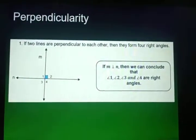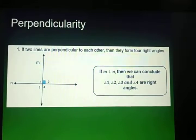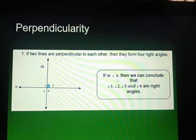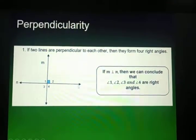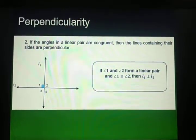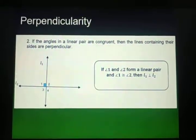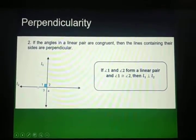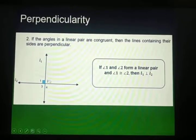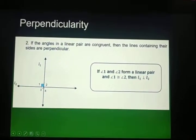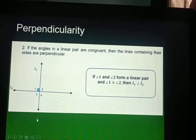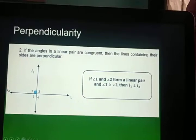Let us remember these theorems. First, if two lines are perpendicular to each other, then they form four right angles. Line M is perpendicular to line N, so we can conclude that angles 1, 2, 3, and 4 are right angles. Second, if the angles in a linear pair are congruent, then the lines containing their sides are perpendicular. Angles 1 and 2 form a linear pair — their sum is 180 degrees and they form a straight line. Angle 1 is 90 degrees, so they are congruent, meaning the vertical line is perpendicular to the horizontal line.